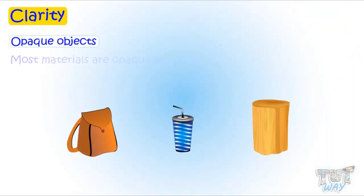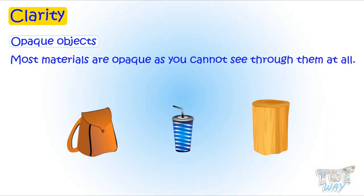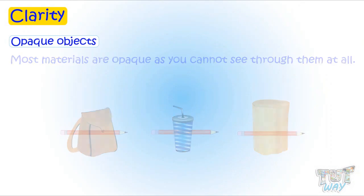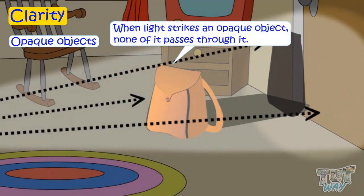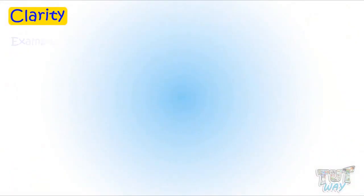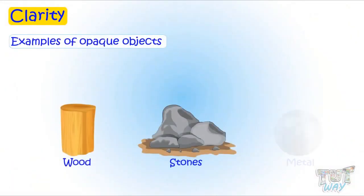Next are opaque objects. Most materials are opaque, as you cannot see through them at all. When light strikes an opaque object, none of it passes through them. Materials such as wood, stone, and metals are opaque.